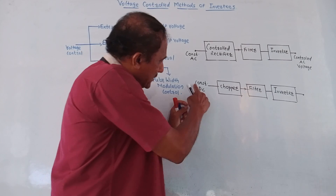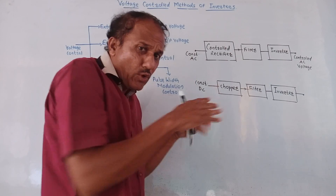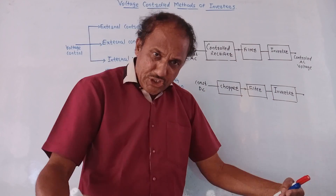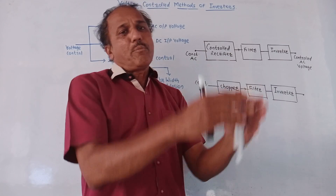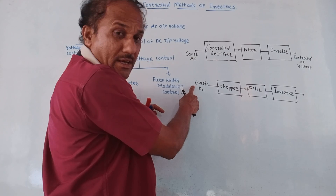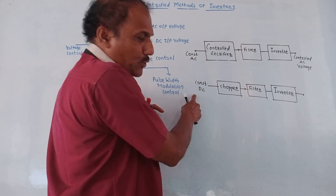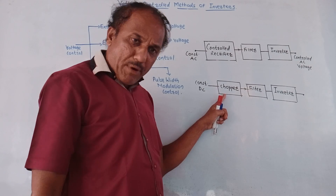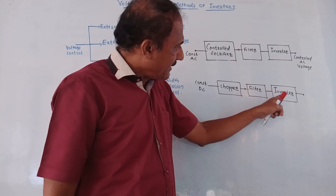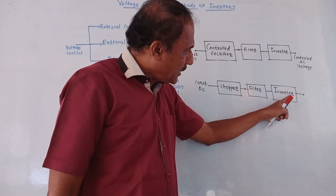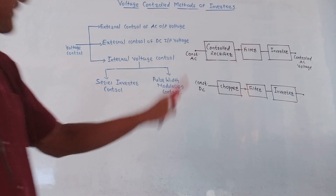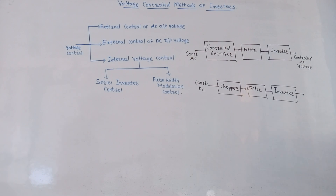Suppose the available input voltage is constant DC voltage. We don't want a constant value — we want the input to be varied depending on the requirement so that the output of the inverter will change accordingly. In that case, we use one chopper followed by a filter. This will change the DC value according to the requirement, and this variable DC is applied at the input of the inverter, giving us controlled AC voltage at the output. This is the external control of DC input voltage.